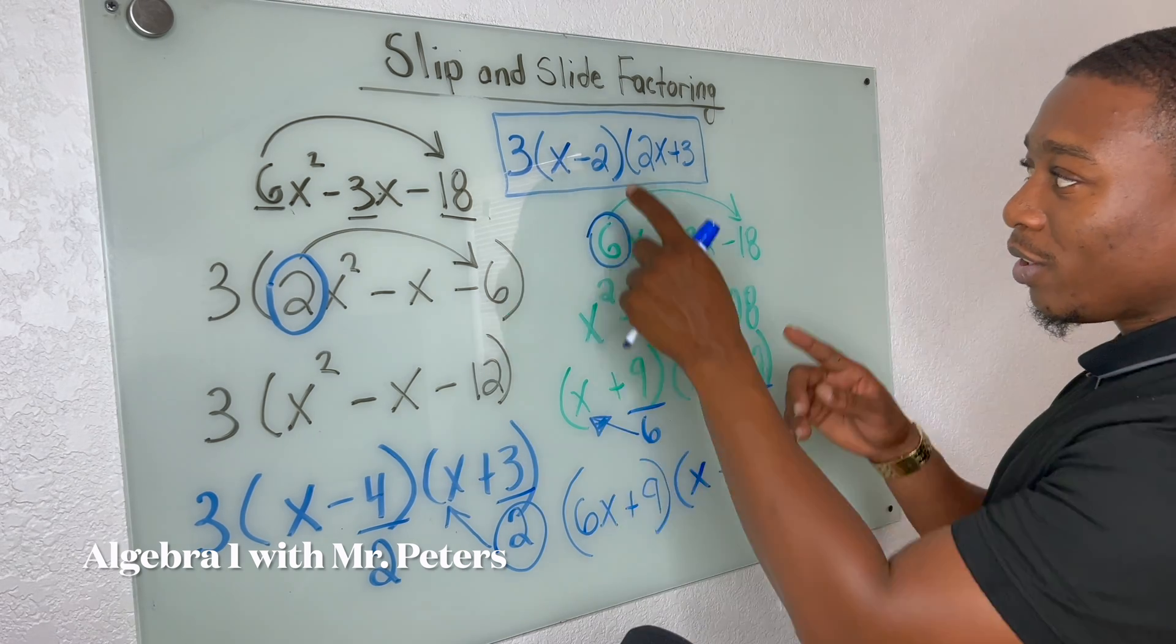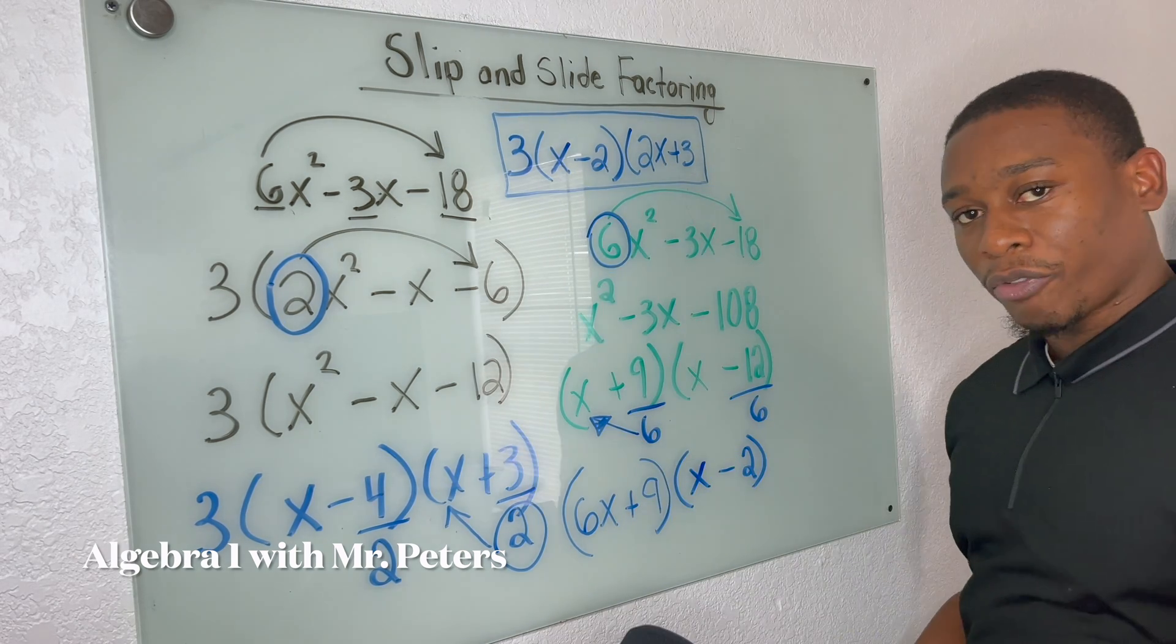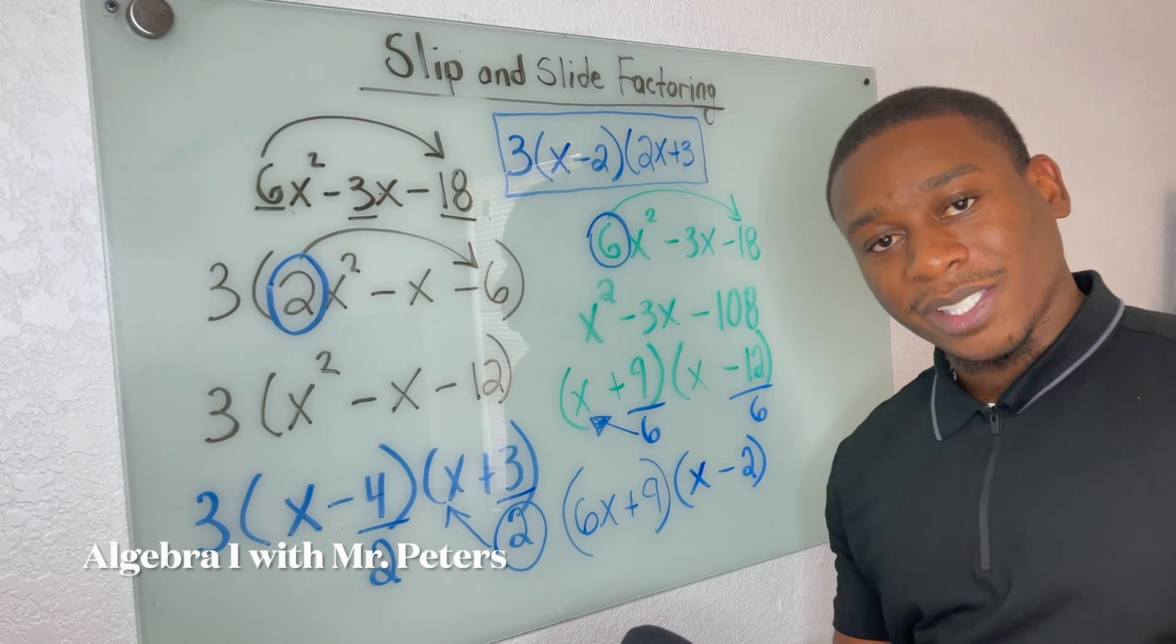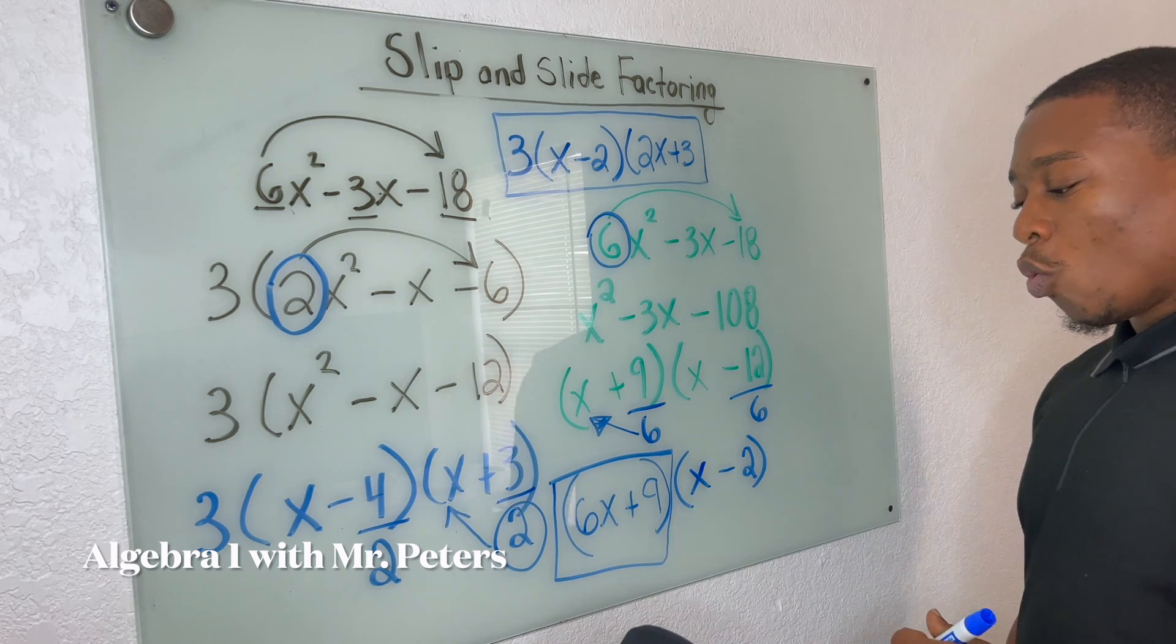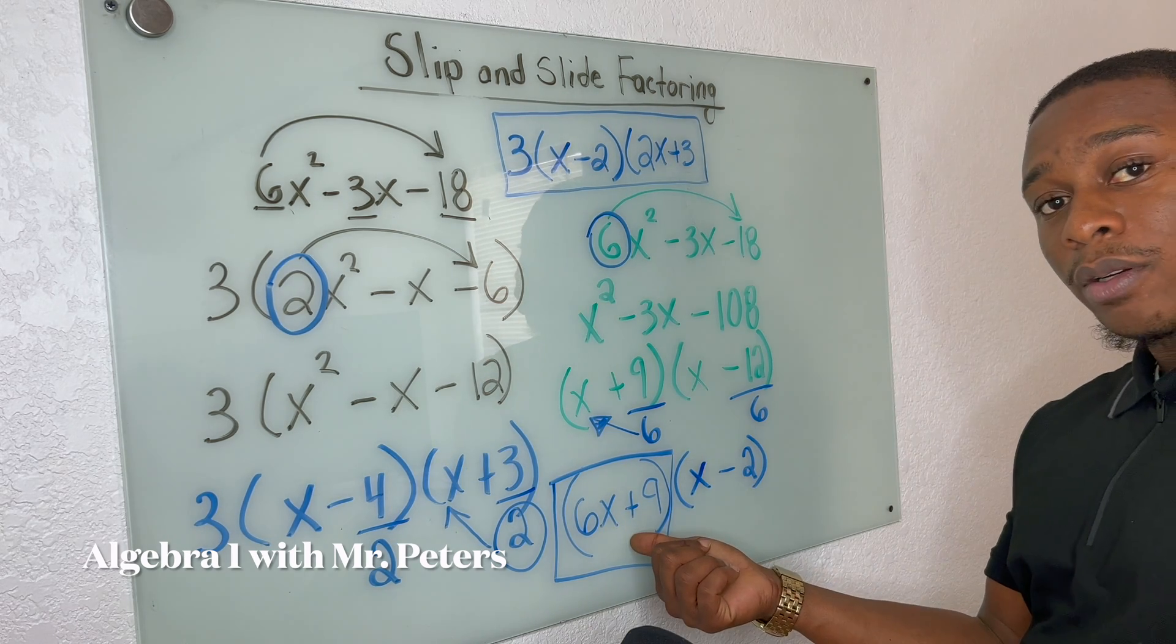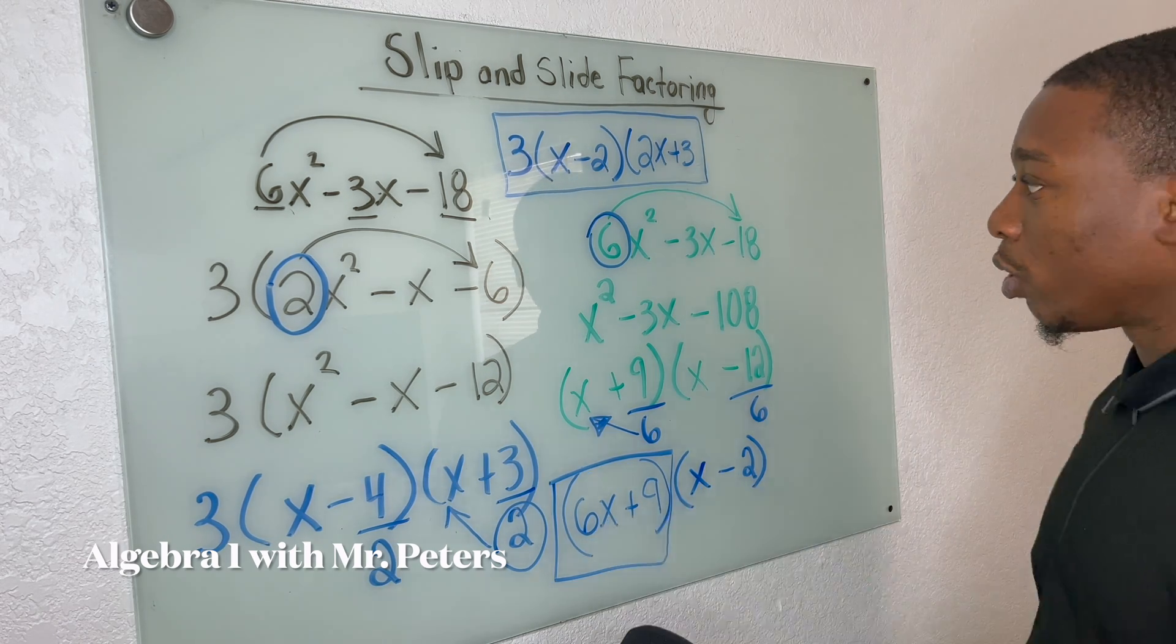And when you look at these two answers, they're different, right? Yes, they are. But that's because we could simplify this even further. What if I pulled out a three? What if I simplify by pulling out a three?